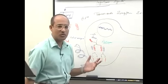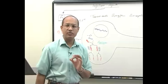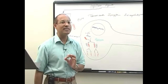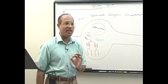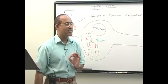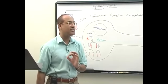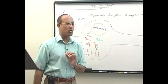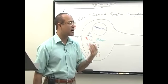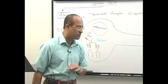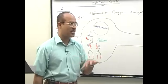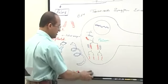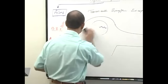Prions are the smallest infectious agents known, and they don't have any DNA or RNA. Yet after entering your body they can increase their number to billions, not by producing offspring but by corrupting your own prion-related proteins. This was a brief introduction to prions; we'll discuss them in detail later.